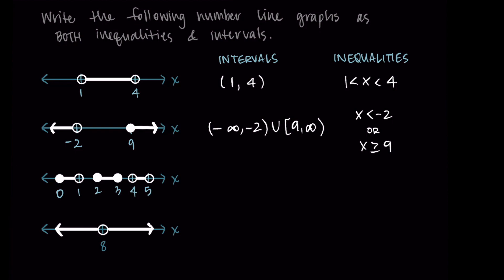The next graph has three parts. Starting left to right: from zero to one, including zero but not one — so [0, 1). Union with the second interval from two to three, including both endpoints — so [2, 3]. Union with the last interval from four to five, not including either endpoint — so (4, 5). As an inequality, first part: zero is less than or equal to x is less than one.